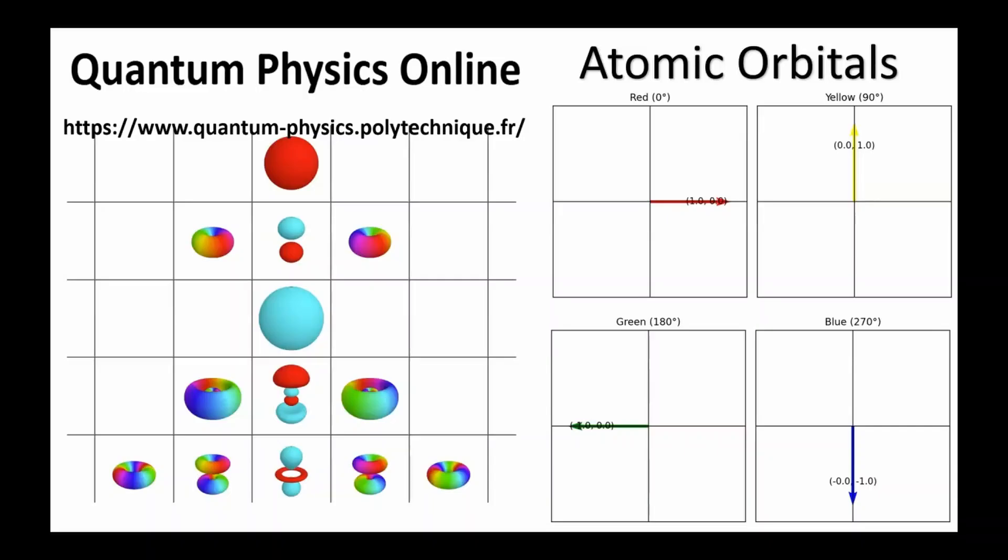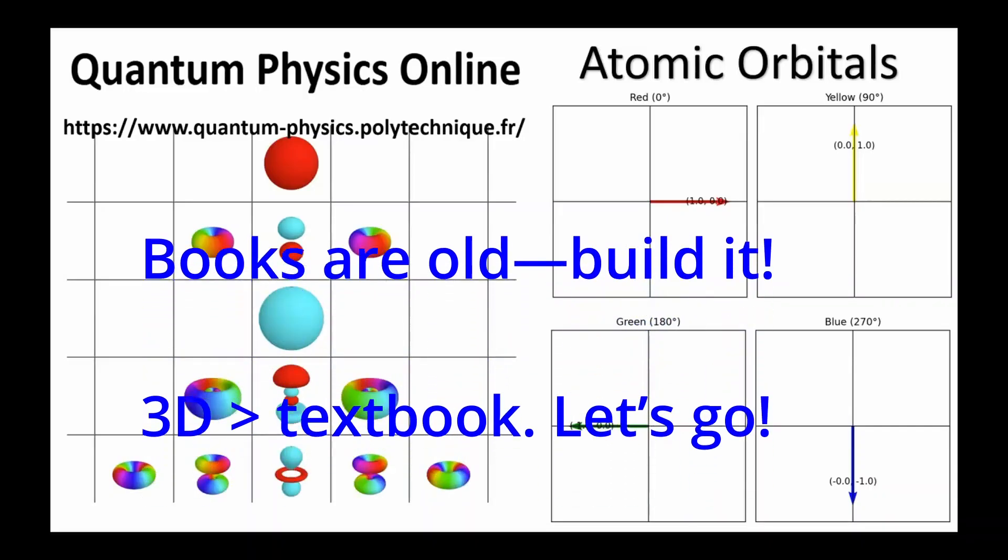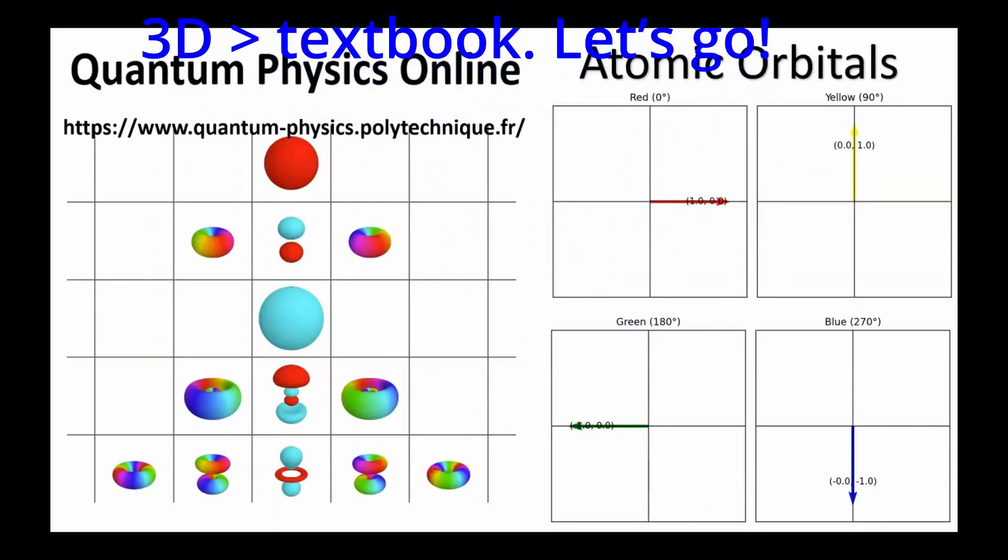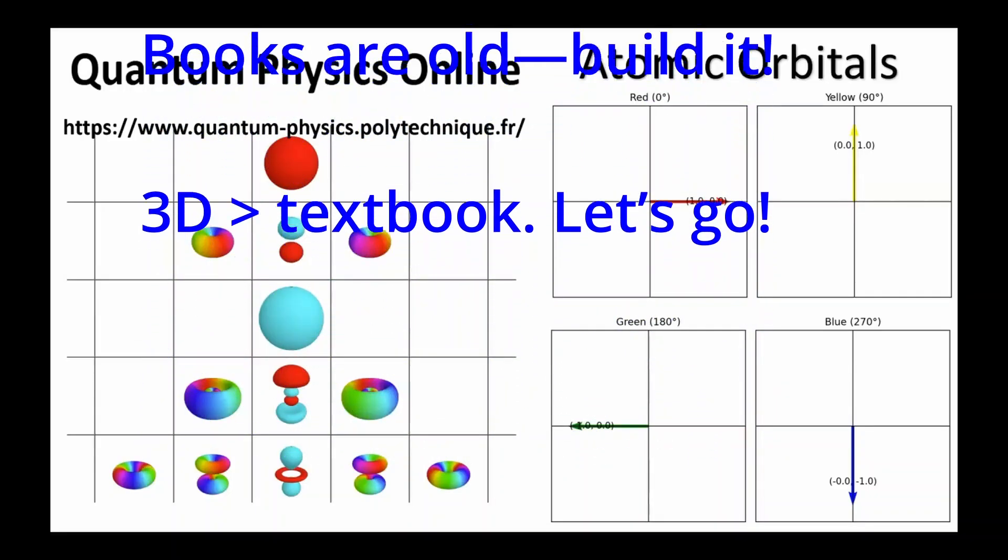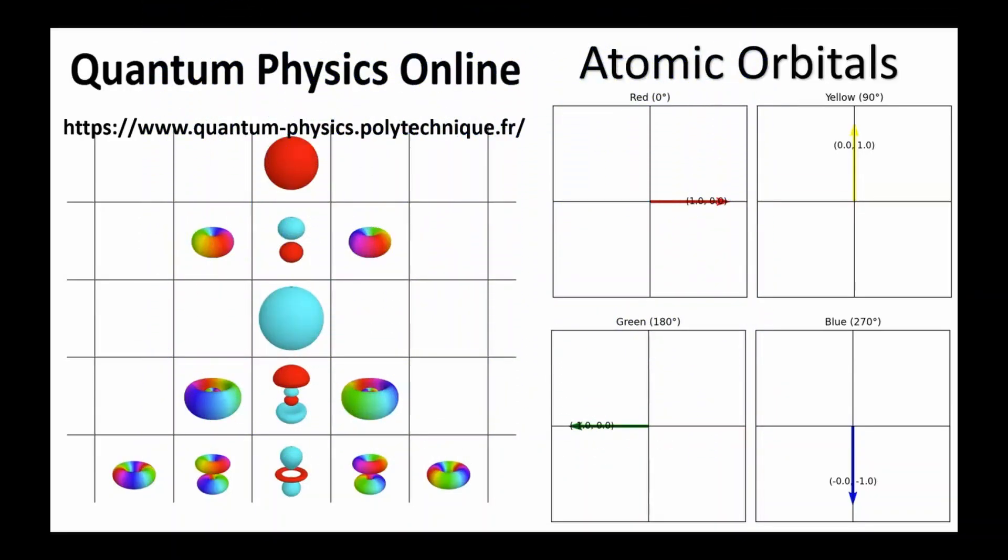It would be ideal if we could actually see these complex numbers rotating in three-dimensional space. But since that's hard to visualize on a flat screen, we use these kind of simplified models. A science museum or virtual reality display could do so much better. Imagine a 3D rotating visualization where you can not only see the complex arrows at every point in space, but also add wave functions together in real time. That would make quantum mechanics intuitive and accessible. Come on, people. Let's put this together. We need these to be 3D models in order to actually see this.